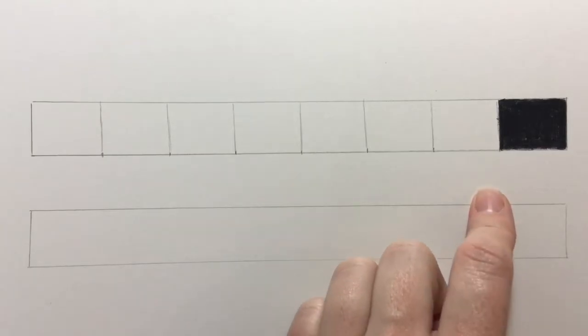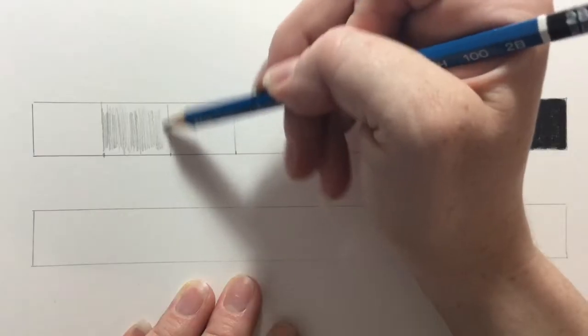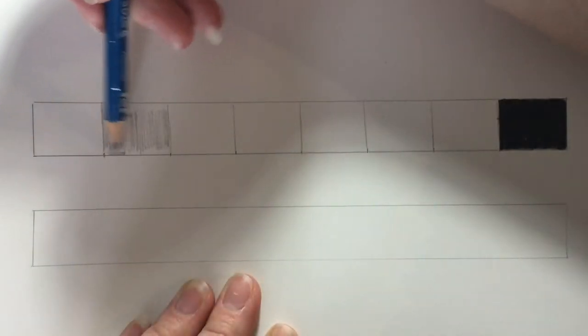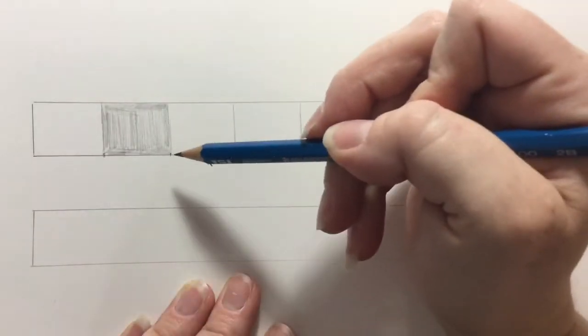Our goal is for each box within the value scale to look different from the one next to it. My pencil is nice and sharp, and I'm going to do my next lightest value. Remember the first box in the value scale is going to be the white of the paper.